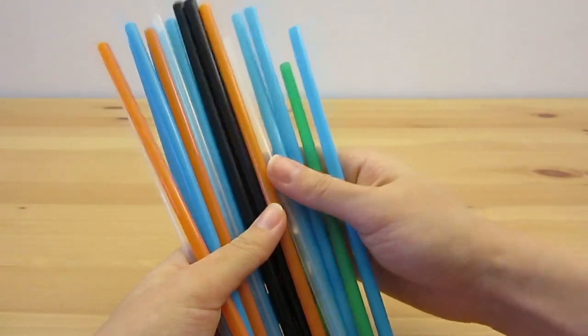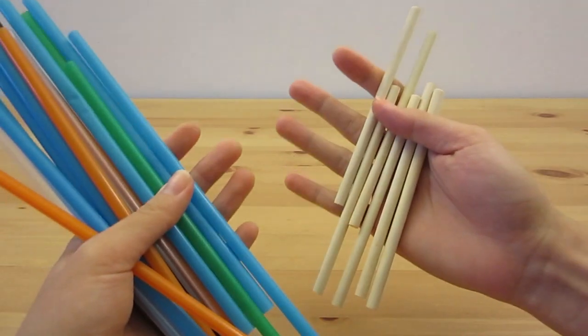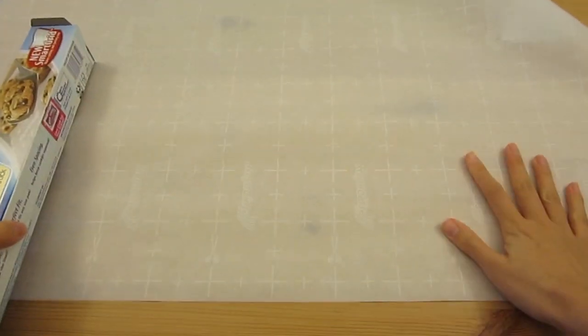I have collected a bunch of straws and saved up a lot of popsicle sticks over the years but you can also buy them very cheaply. The first thing I'm going to do is place a layer of parchment paper onto my work surface. You'll see why later.